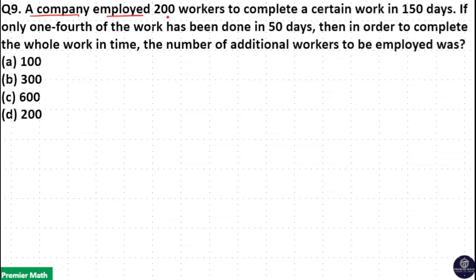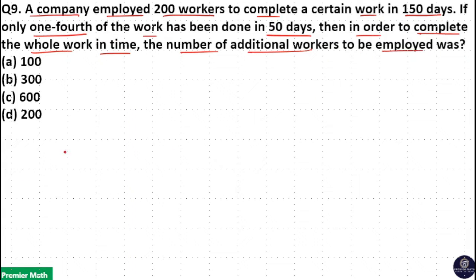A company employed 200 workers to complete a certain work in 150 days. If only one fourth of the work has been done in 50 days, then in order to complete the whole work in time, the number of additional workers to be employed is — here, 200 employees completed one fourth of the work in 50 days.